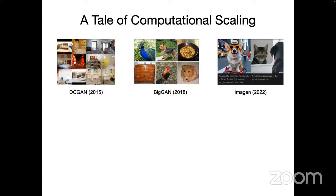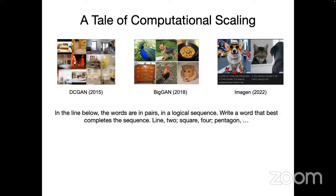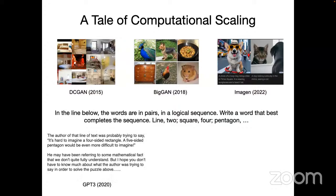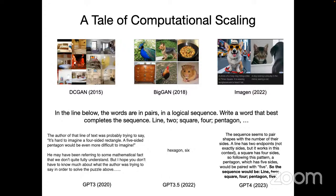In the language space, if you give a model a logical sequence — like line two, square four, pentagon — and ask it in 2020, it completely misunderstands it. Ask GPT-3.5 and it kind of gets the logic incorrectly. But by GPT-4, it's able to infer the logic and complete it. We've seen a lot of progress in scaling up large generative models.